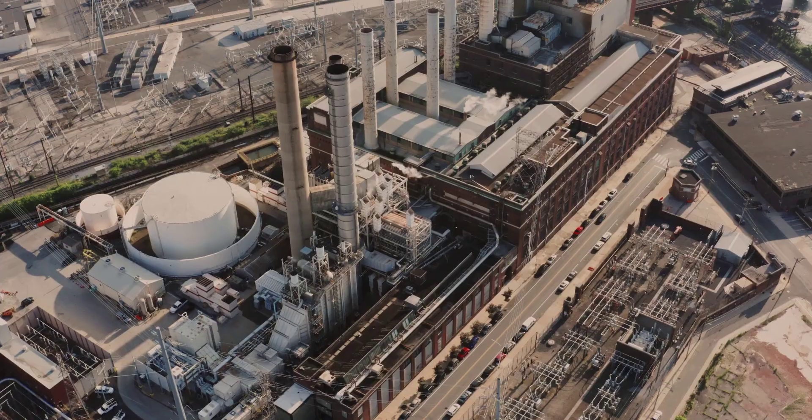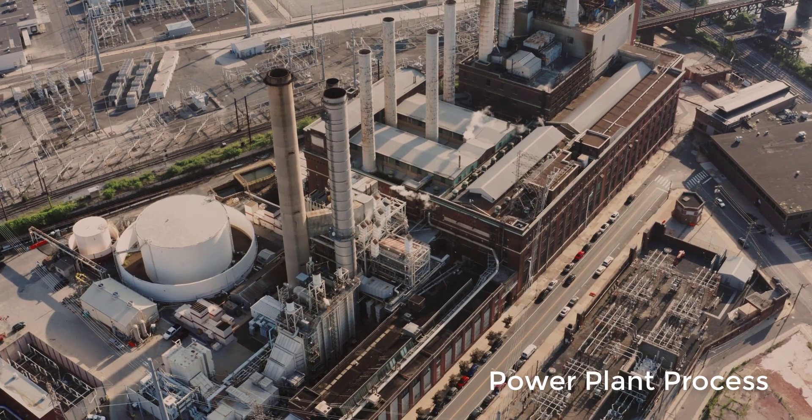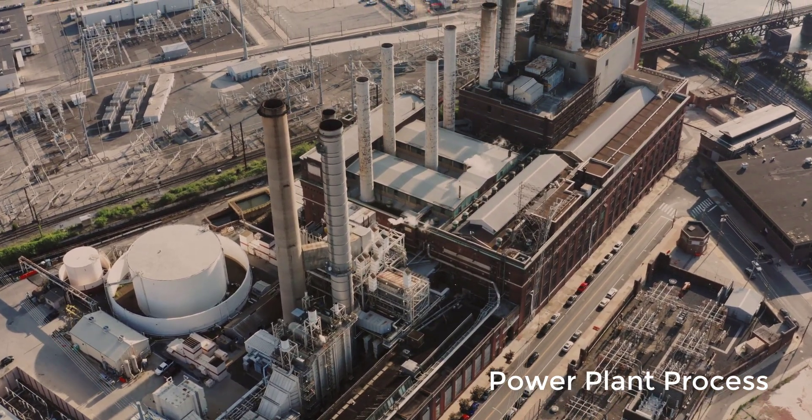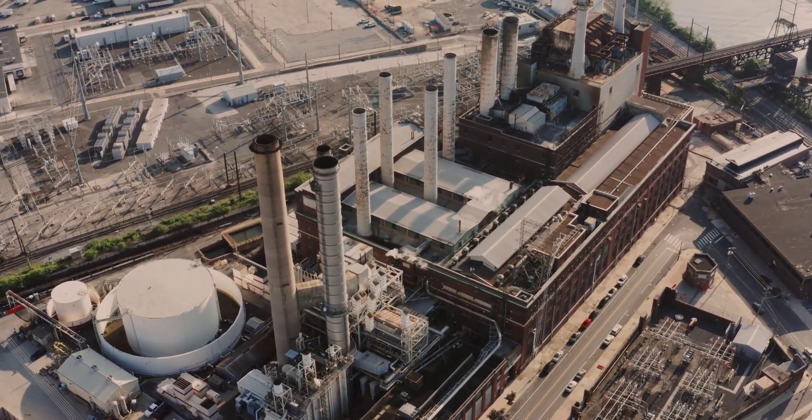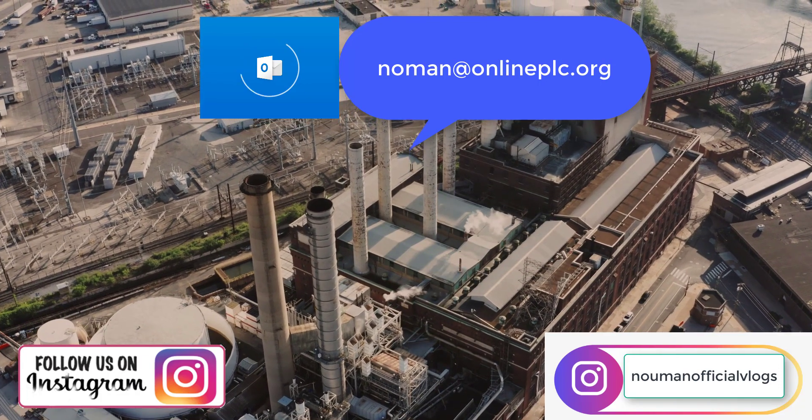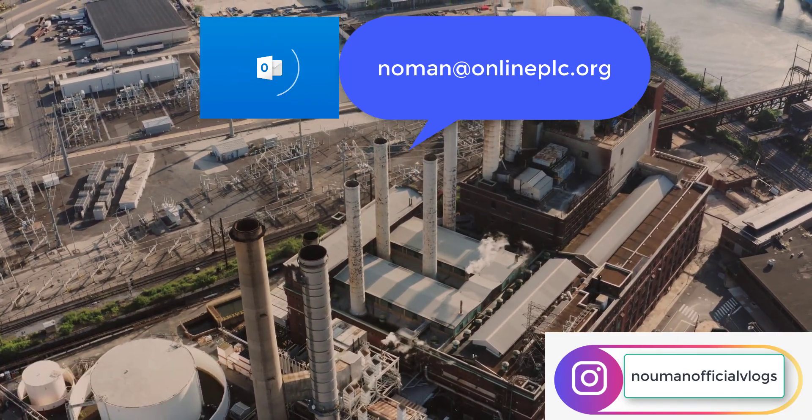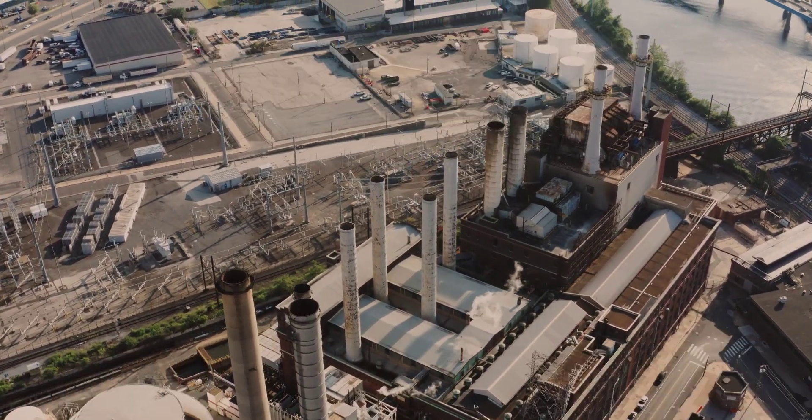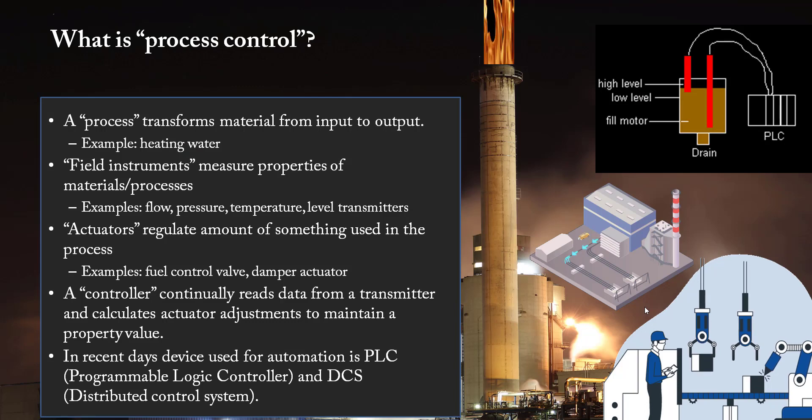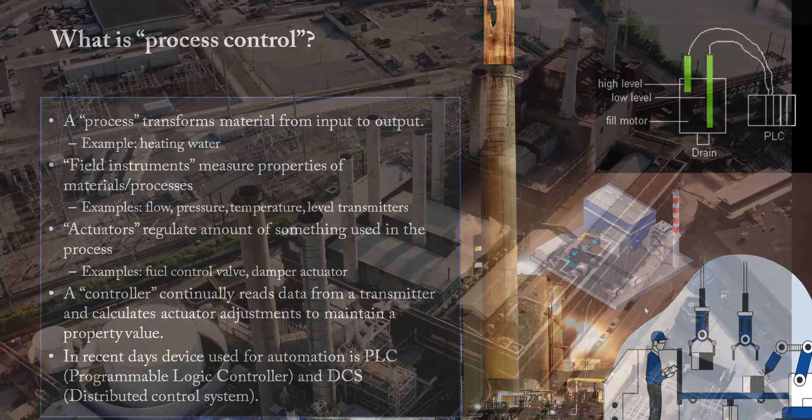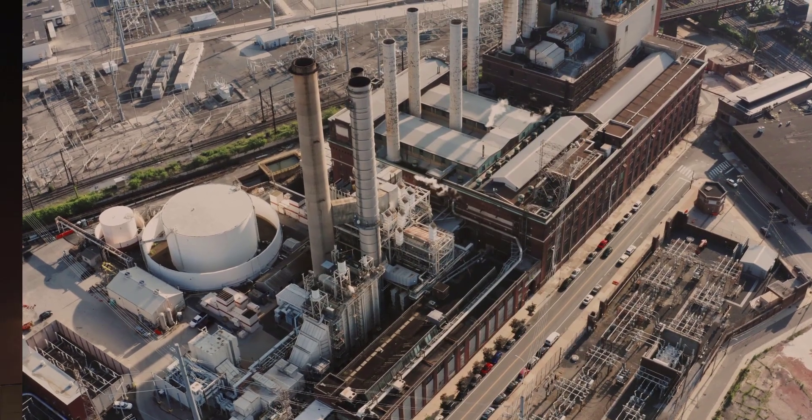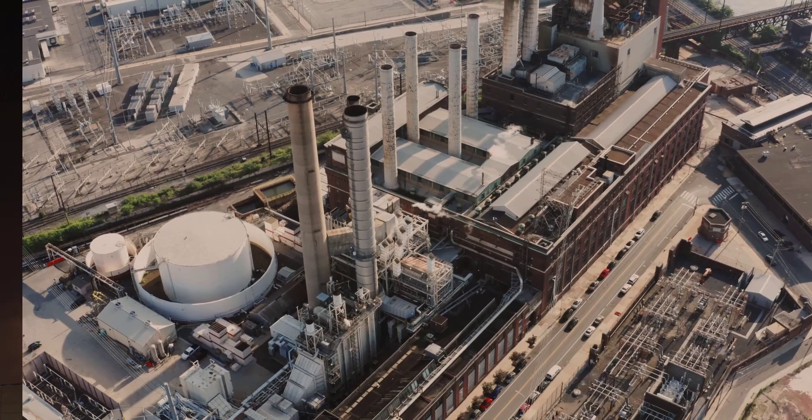Before understanding what is process automation, it's important to understand what is process. So first we will talk about what is process. If we understand process, it is easy to understand process control or process automation. Process transforms material from input to output. The steps involved to transform the material from input to output is called process.